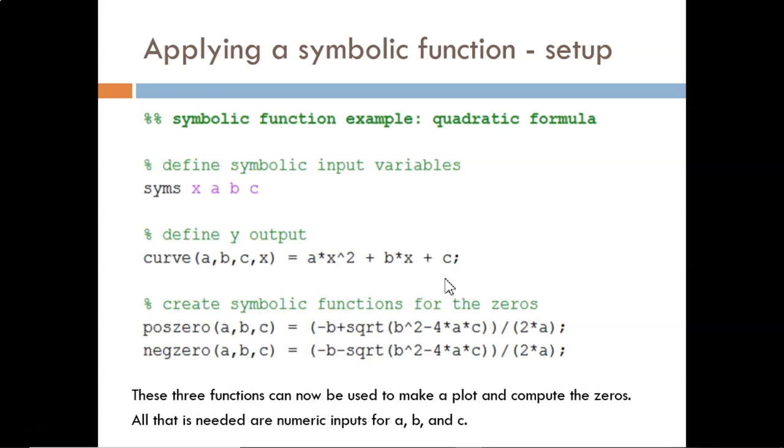Next, we'll define functions that can compute each of the zeros. These are taken straight from the quadratic formula shown here. The plus or minus symbol in the formula indicates there are two zeros. So, this first function uses the plus sign, the second function uses the minus sign.